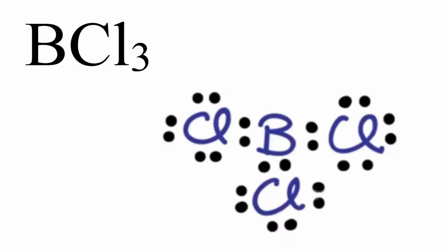From our Lewis structure, we can see that boron has three chlorine atoms around it and no lone pair electrons.